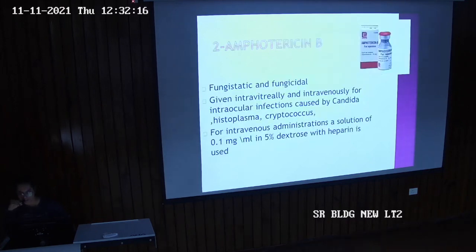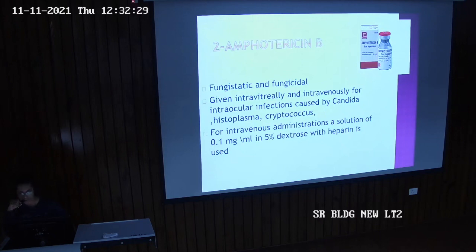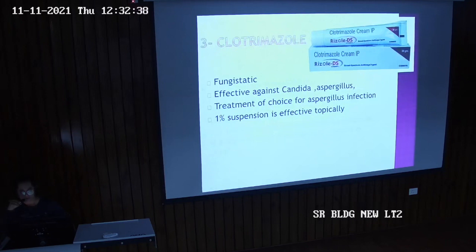Amphotericin B. It is fungistatic and fungicidal. Given intravitreally and intravenously for intraocular infections caused by candida, histoplasma, and cryptococcus. For intravenous administration, a solution of 0.1 mg per ml in 5% dextrose with heparin is used. Then clotrimazole — fungistatic, effective against candida and aspergillus. Treatment of choice for aspergillus infection mainly. 1% suspension is effective topically.